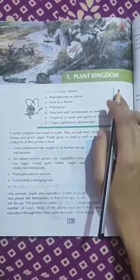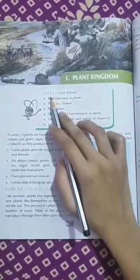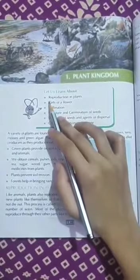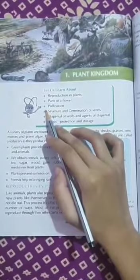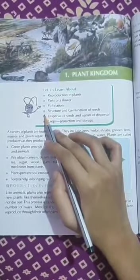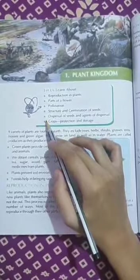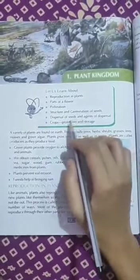In this chapter we are going to study about reproduction in plants, parts of a flower, pollination, structure and germination of seeds, dispersal of seeds and agents of dispersal, and in crops protection and storage.